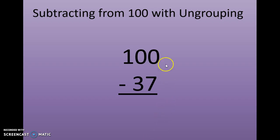We look and we see that we have zero ones and we need to subtract seven ones. We cannot ungroup the tens place because we also have zero there.